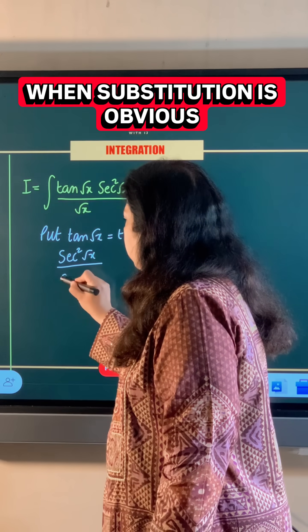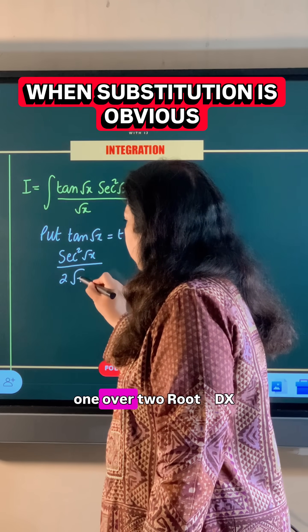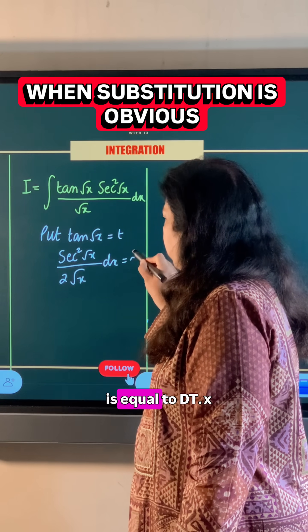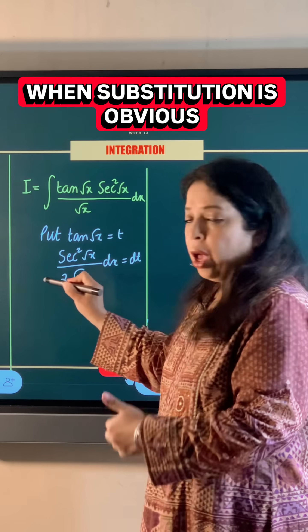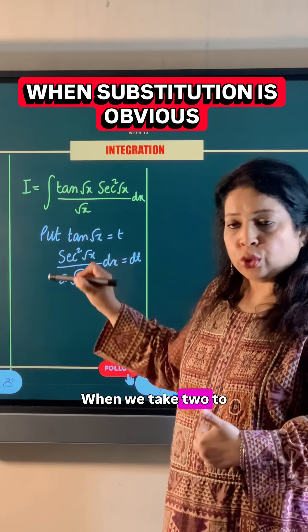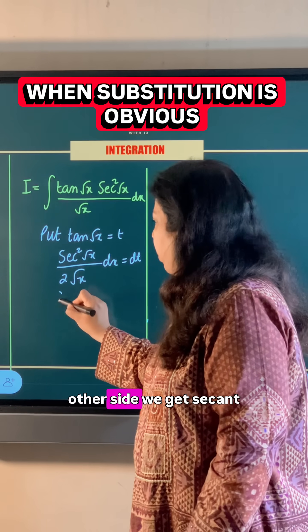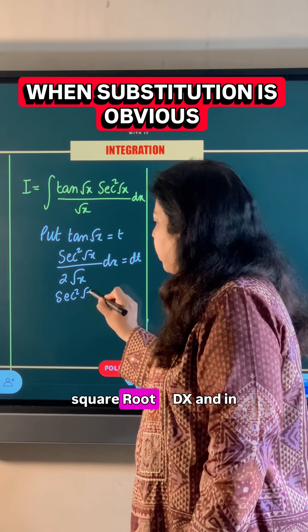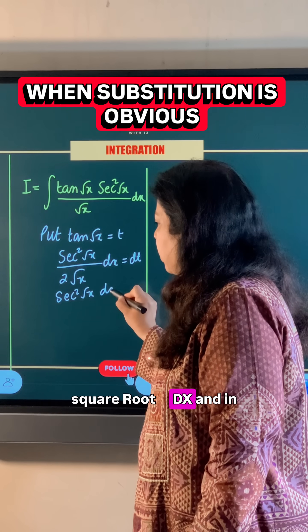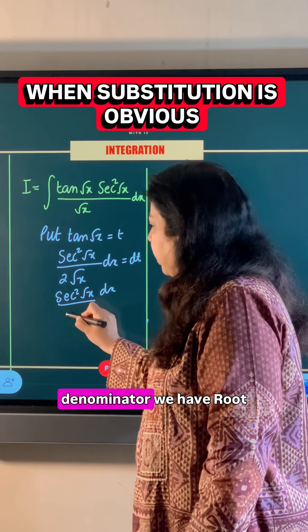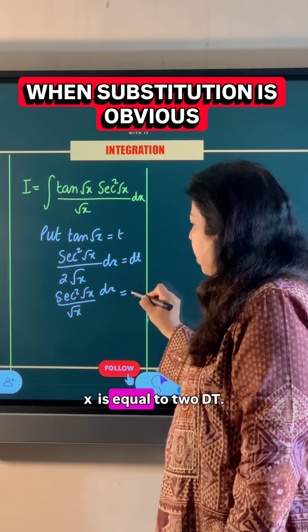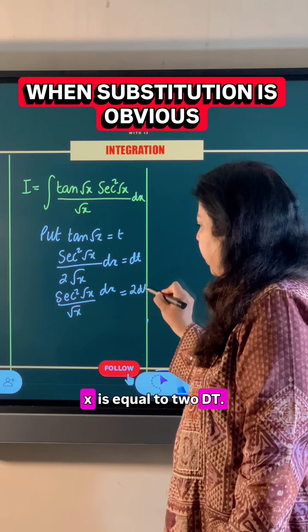So (1 / 2√x) dx = dt. Taking 2 to the other side, we get sec²(√x) dx over √x equals 2 dt.